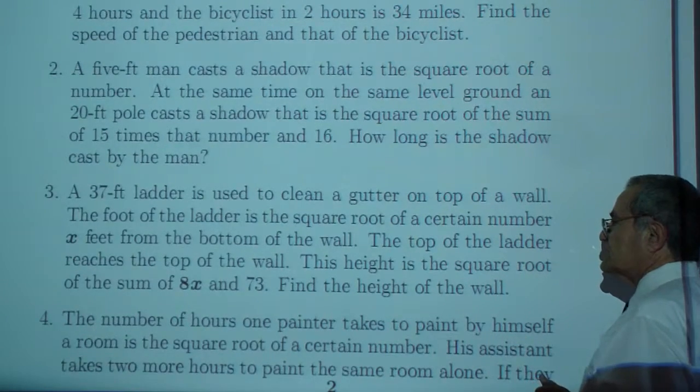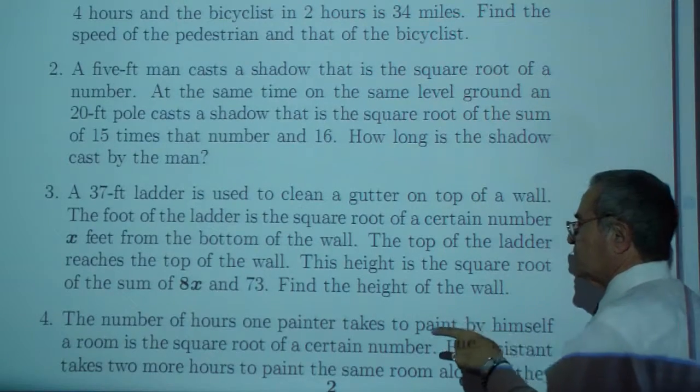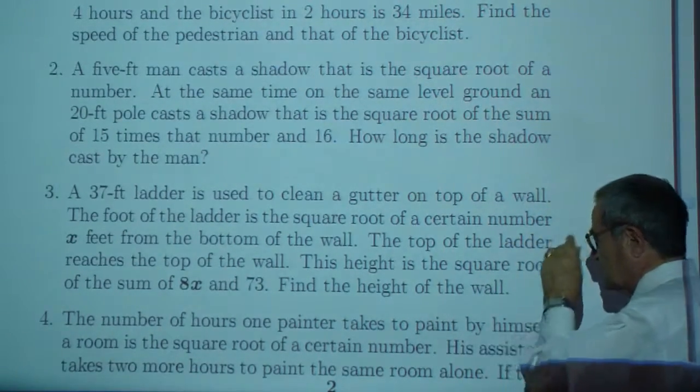The top of the ladder reaches the top of the wall. This height is the square root of the sum of 8x and 73. Find the height of the wall.